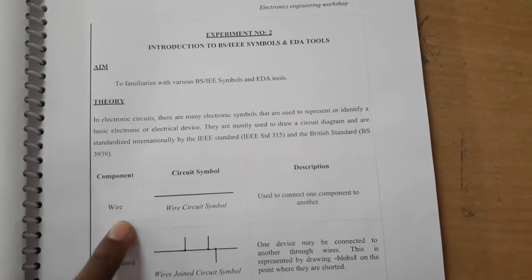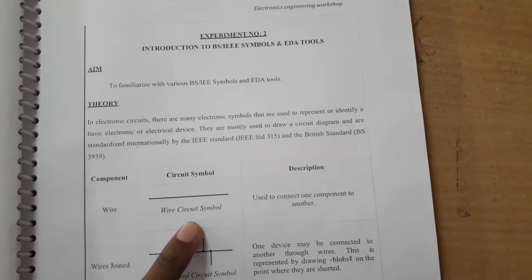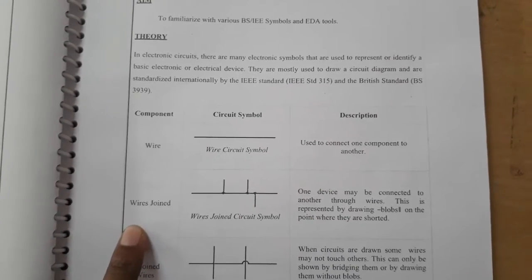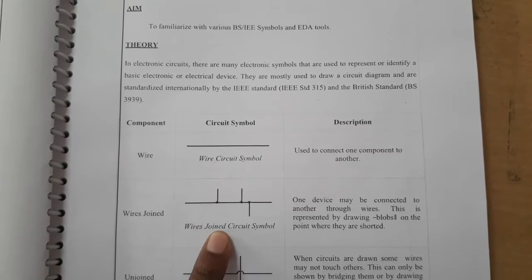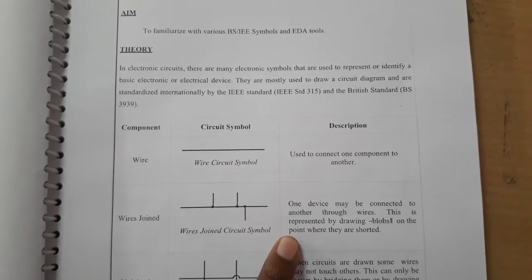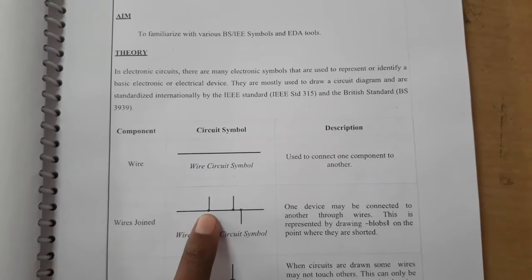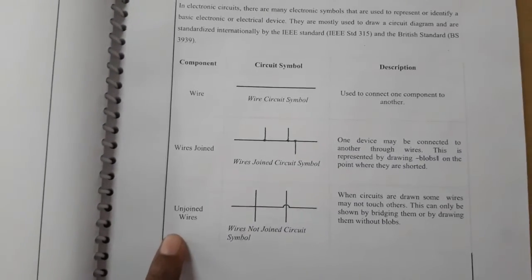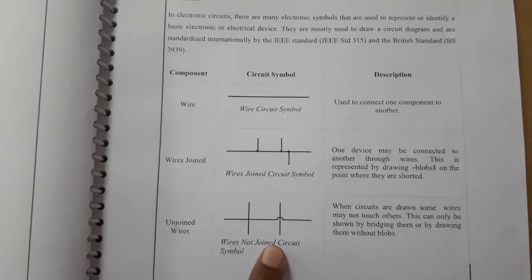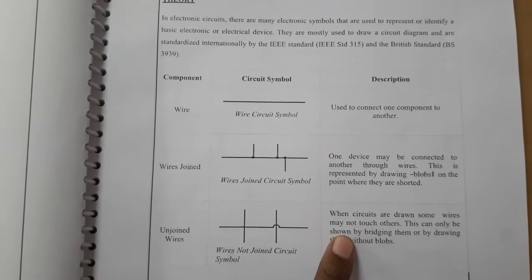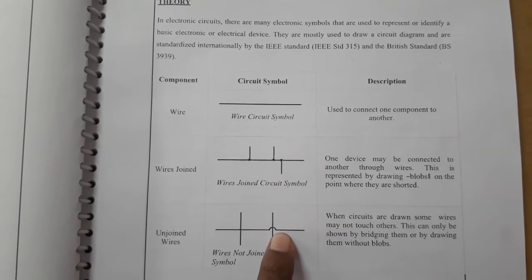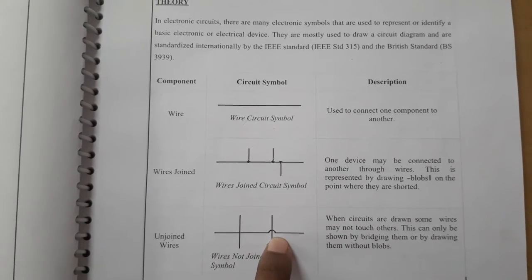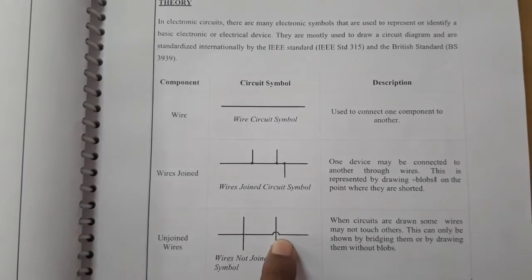The first component is wire. This is the circuit symbol; wires are used to connect one component to another. Second is wire joint — wires connecting devices are represented by drawing blobs at the point where they are joined. Next is unjoined wires. When circuits are drawn, some wires may not touch others; this can be shown by drawing a bridge or by drawing them without blobs.